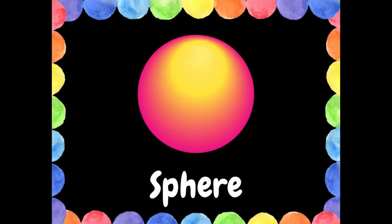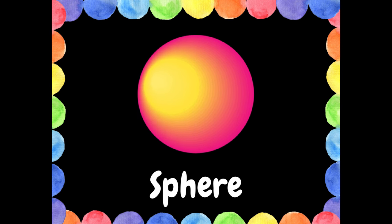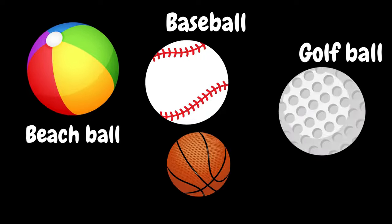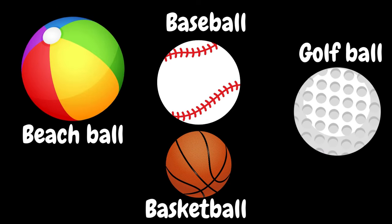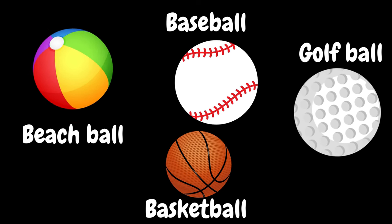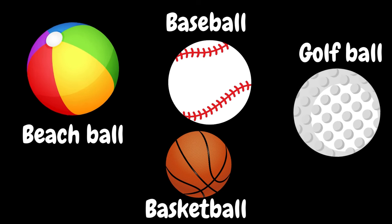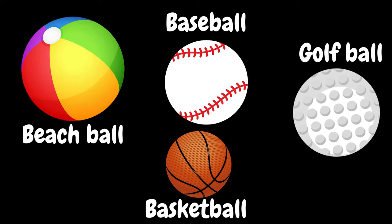This shape is called a sphere. Can you say sphere? A sphere is round and plump. It's not flat. Let's look at some examples of a sphere. I see a beach ball, a baseball, a golf ball, and a basketball. These are all examples of a sphere.